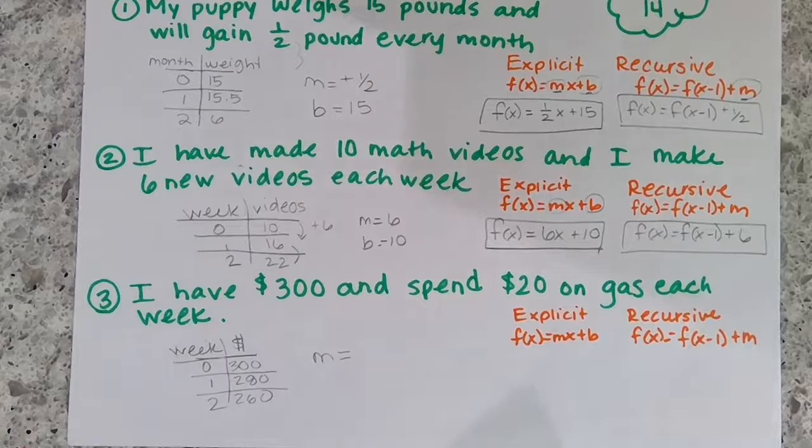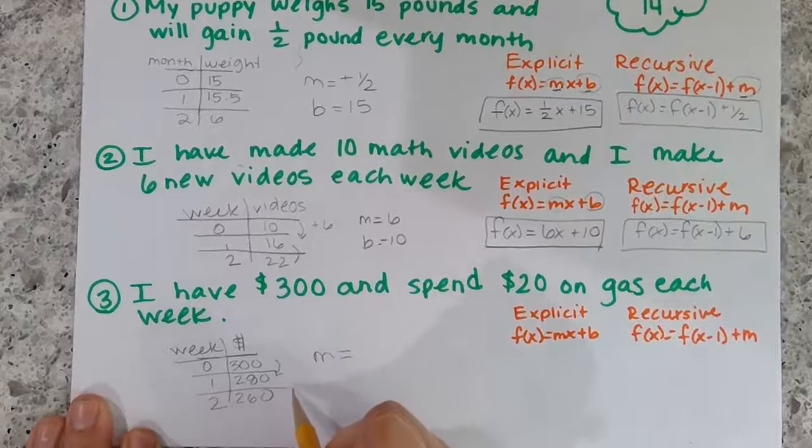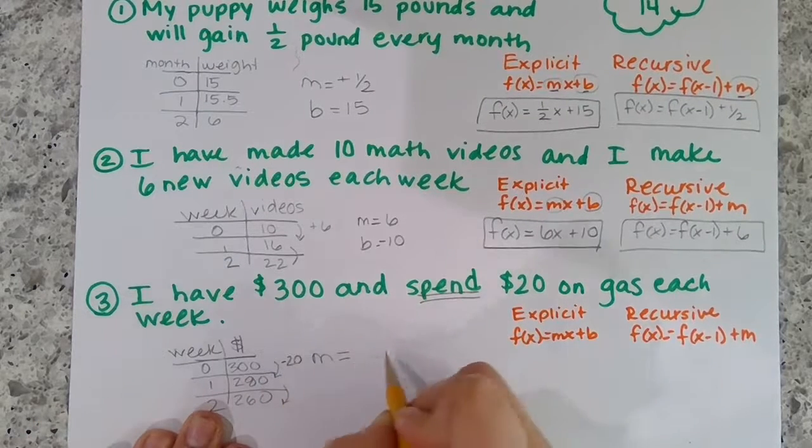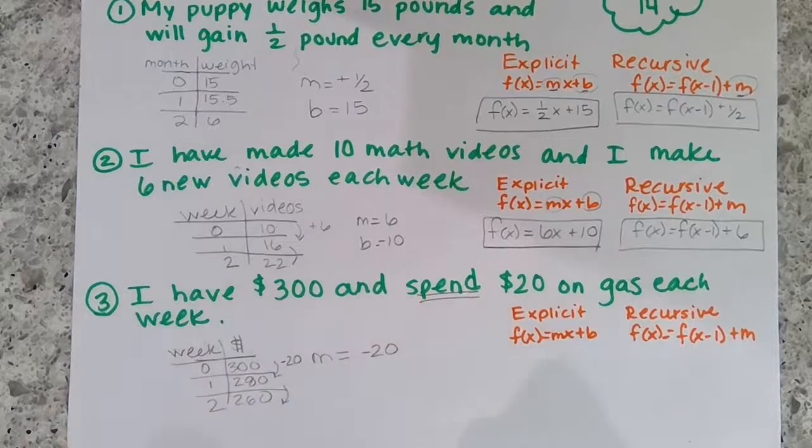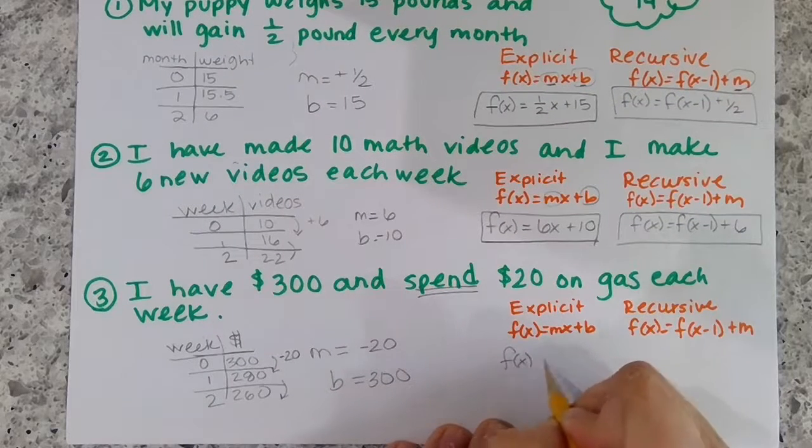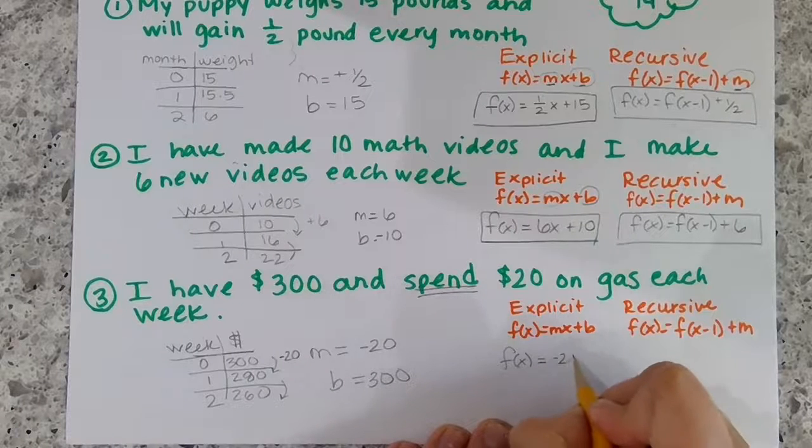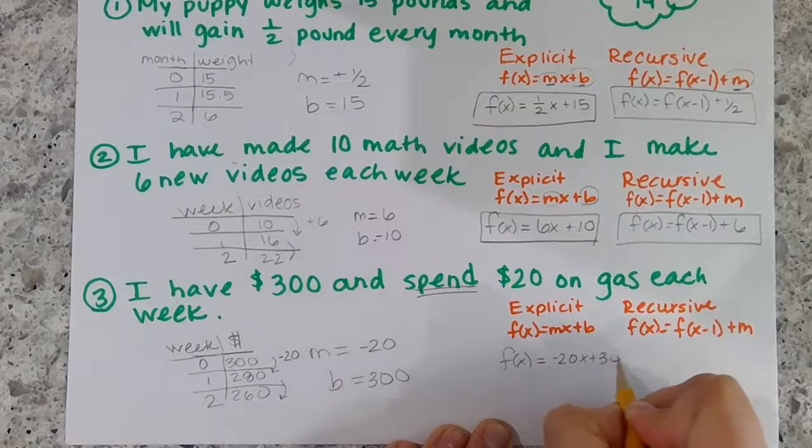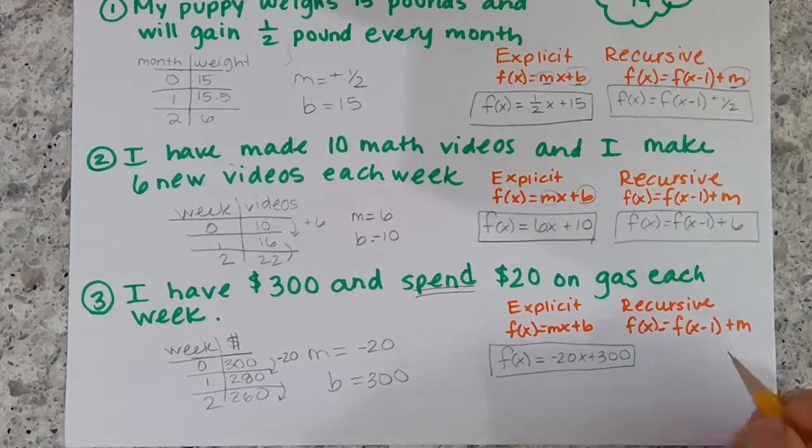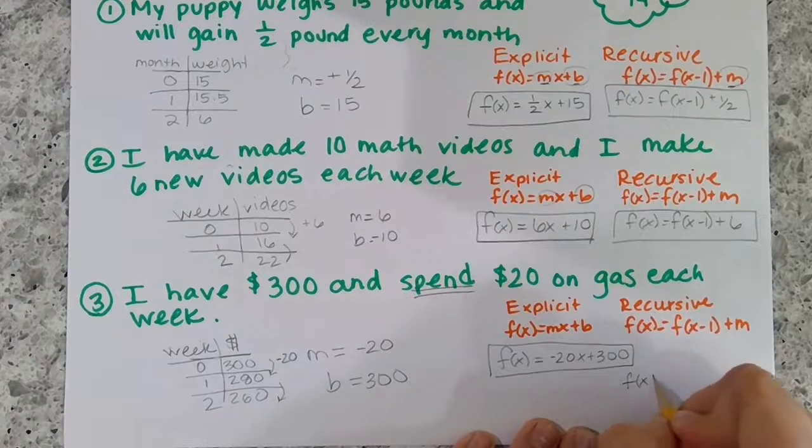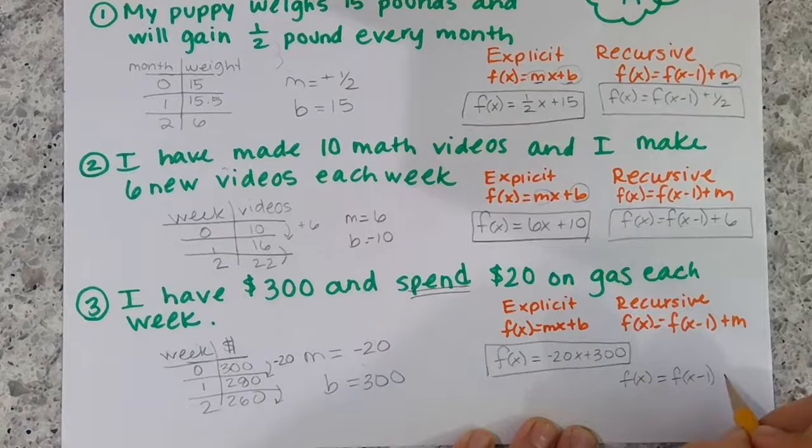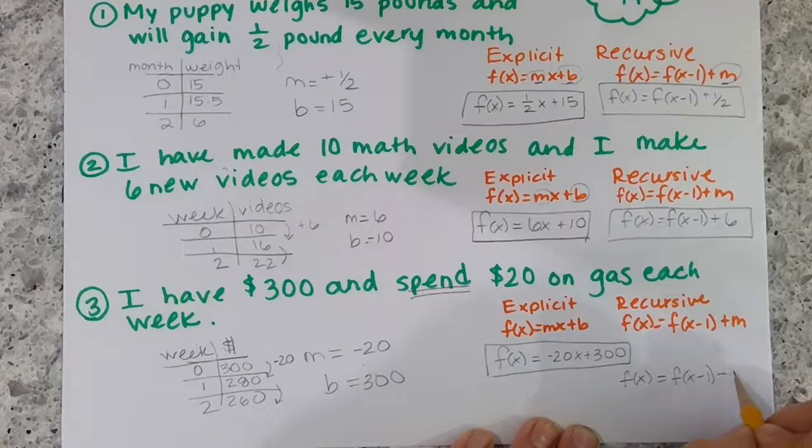So what's your slope on this one? Because you're spending money, that means it's negative 20. So your slope is negative 20, and your starting value is 300. So your equation is f(x) equals negative 20x plus 300. And that's the only part that people miss: be careful that you're spending money, you're not actually saving money. The recursive is f(x) equals your previous term, f(x minus one), you could do plus negative 20 or just minus 20.